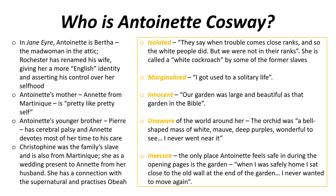Antoinette is also very insecure. The only place she feels safe in during these opening pages is the garden — not the house, which would be a symbol of colonial power, but the garden, the natural world. Meanwhile the whole island and the whole world seem to be in decay around her. There's lots of conflict to do with the Emancipation Act and how people are going to find their places in this new society. She says: 'When I was safely home, I sat close to the old wall at the end of the garden. I never wanted to move again.' She really wants to retreat there and be on her own.